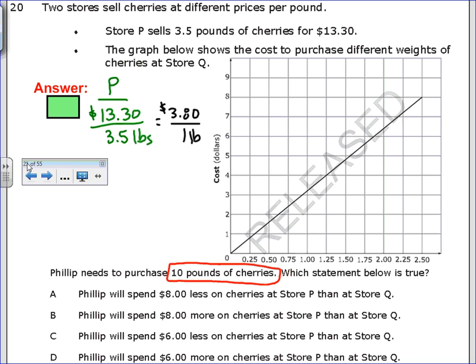Well, now let me find this out for store Q. Except they've given me a graph. So I have to look where it goes through a corner, which is right here. They're telling me that the cost is $4, and that gives me 1.25 pounds. Well, I'm going to do that same process to find the unit rate. I'm going to take 4. I'm going to divide it by 1.25, and I get 3.2 for 1 pound.